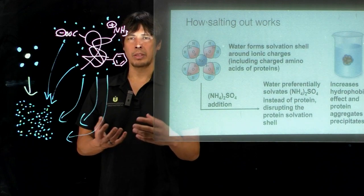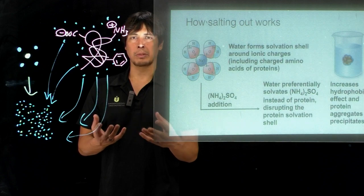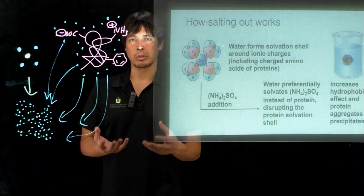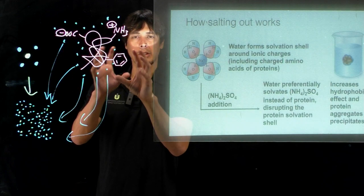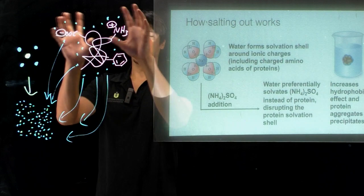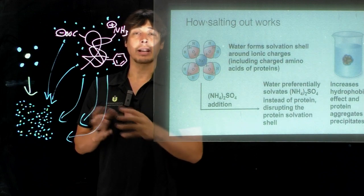This precipitation and how much ammonium sulfate is required to precipitate the protein depends a lot on what type of hydrophobic residues are in the protein and also what type of charge residues and how many of each.